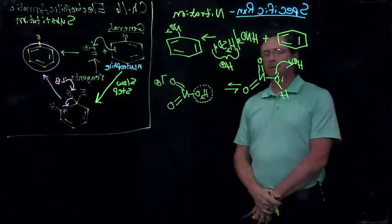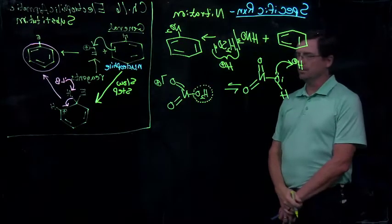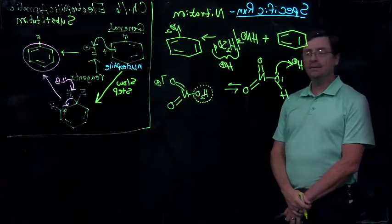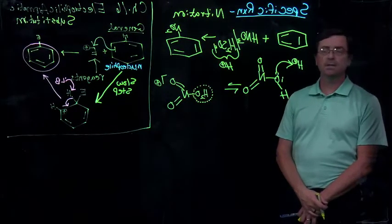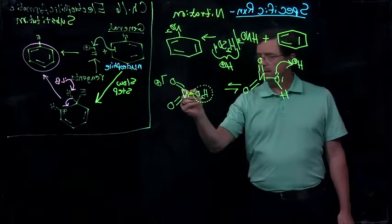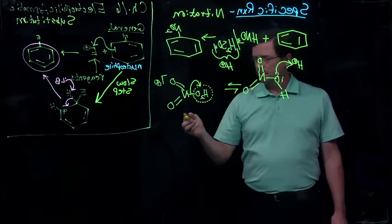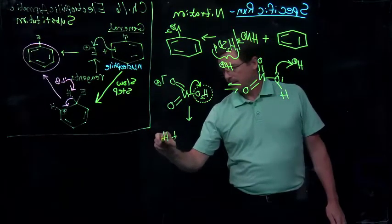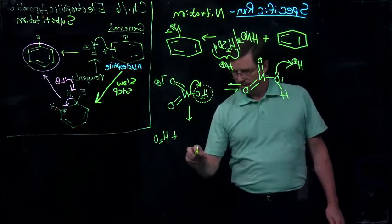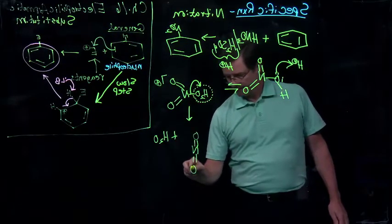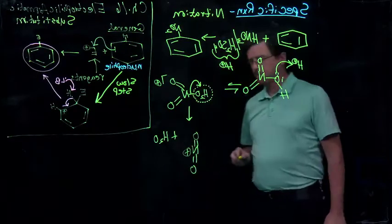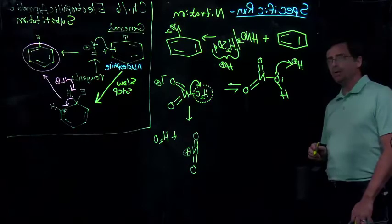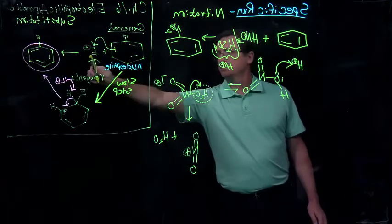what is the molecule in the dashed circle? Well, that's water. And water makes a good leaving group, right? Stable molecules make good leaving groups. And so this leaves the NO2 cation. And this is our electrophile. Remember our electrophile here.